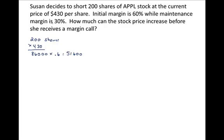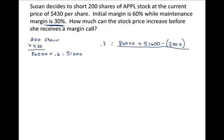What we're curious to find out is how much the stock price can rise before she'll receive a margin call. She won't get a margin call unless her margin drops below 30%. The numerator for the short position margin formula is the equity — the amount the stock was sold for ($86,000) plus the amount Susan put forth ($51,600) minus the current value, which is 200 shares times X price per share. The divisor is 200X as well. We need to solve for X.